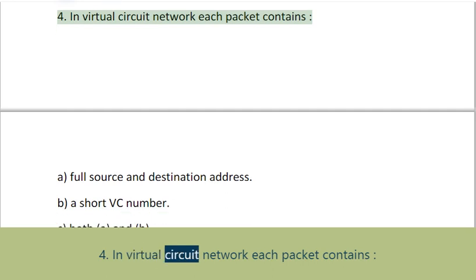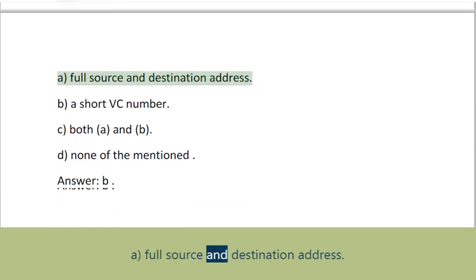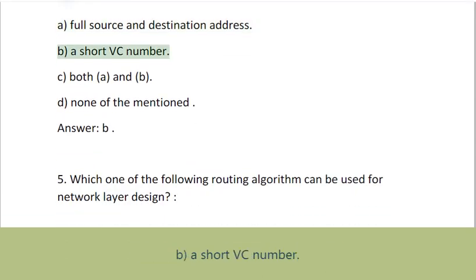Question 4: In virtual circuit network each packet contains: A. Full source and destination address, B. A short VC number, C. Both A and B, D. None of the mentioned. Answer: B.